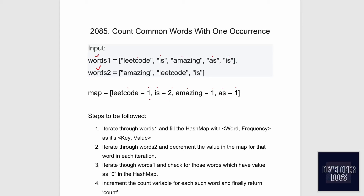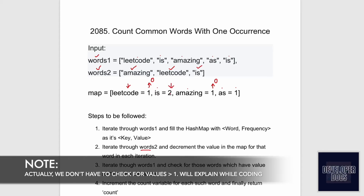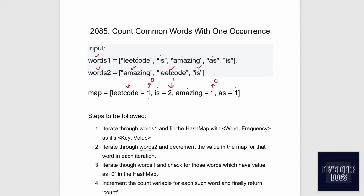We have to check if these words also appear in the words two array. To do that, let's iterate through words two and decrement the value in the map for each word. 'Amazing' is present in the map with value one, so we decrement it to zero. 'Leetcode' is also present with value one, so it becomes zero. 'Is' is present but its value is two, so after decrementing it becomes one.